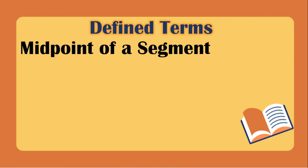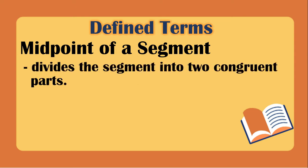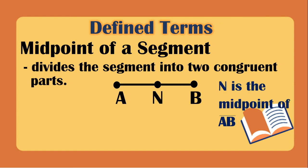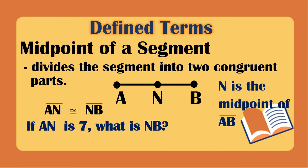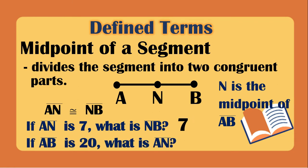We also have connected terms. The midpoint of a segment is the middle point that divides the segment into two congruent parts. For example, in segment AB, midpoint N means AN is congruent to NB. If AN is 7, then NB is also 7. If AB is 20, then AN is 10.